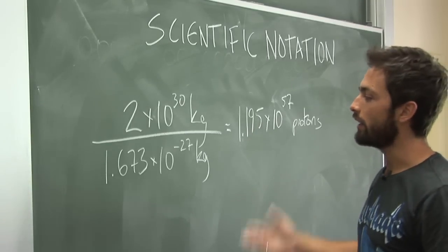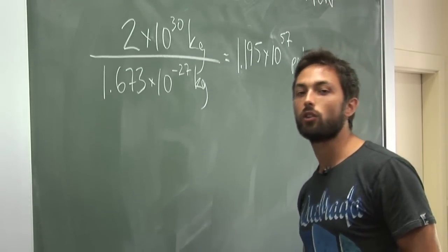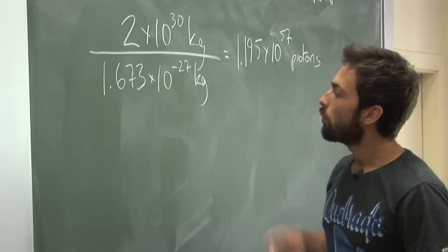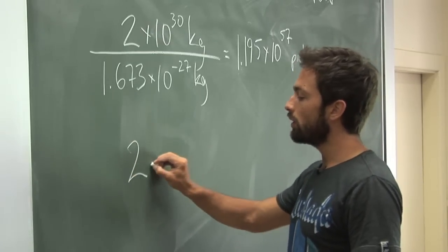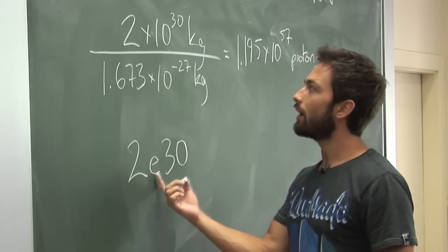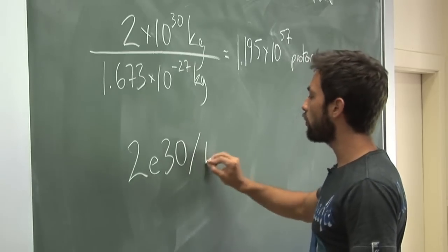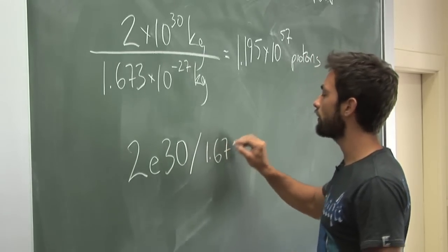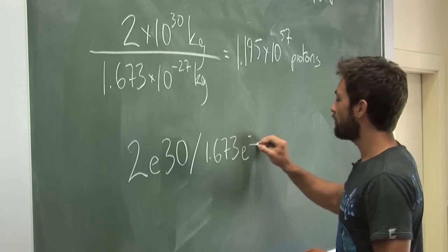Now, if you don't have a calculator handy, you can actually solve this kind of problem by typing it straight into the Google search field. What Google interprets this e as times 10 to the,